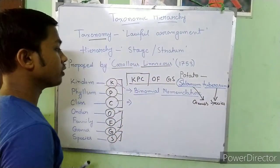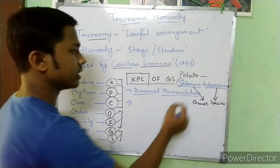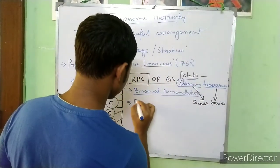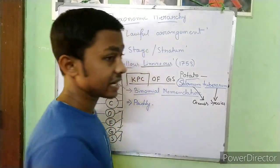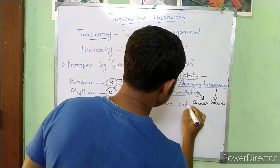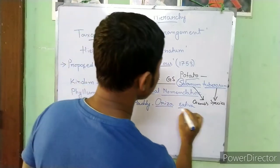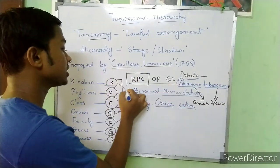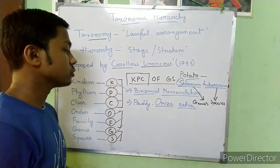In binomial nomenclature, the first letter of the genus name is always capital and the species name is always in small letters. The scientific name should be underlined when written. For example, paddy (dhan) has the scientific name Oryza sativa — 'Oryza' starts with a capital letter and 'sativa' is in small letters.